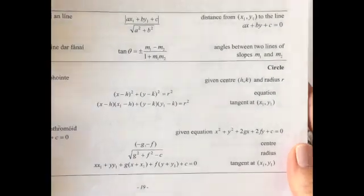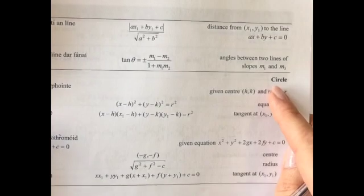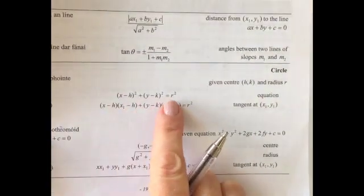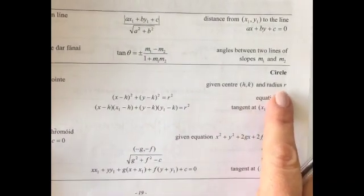In this video we're going to look at the equation of a circle — finding the equation of a circle, and also using the equation of a circle to pull out pieces of information. First we're going to take a look at where this is in the log table. On page 19 under the circle, here is the equation of a circle when given center h, k, and radius r. So let's write that down.